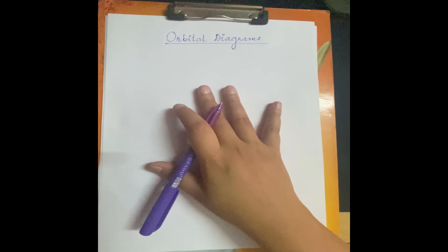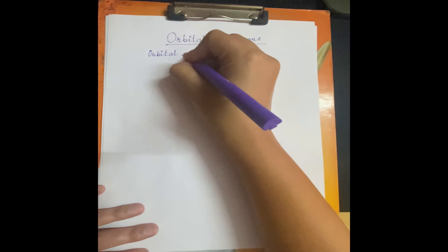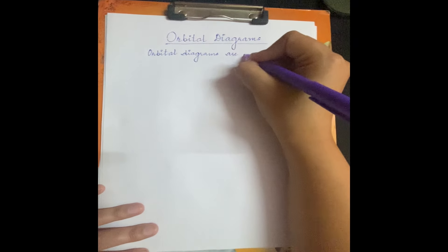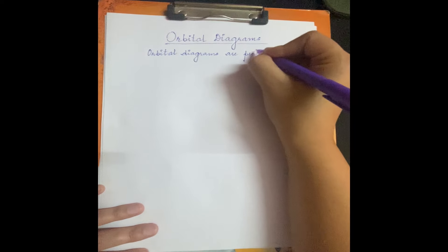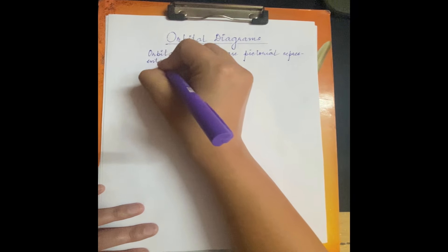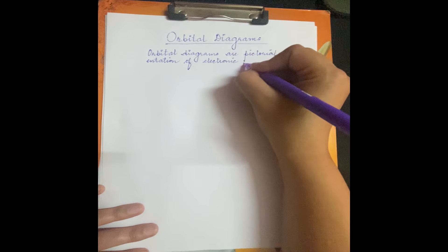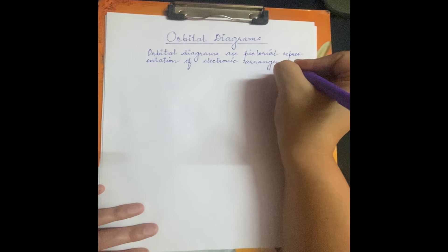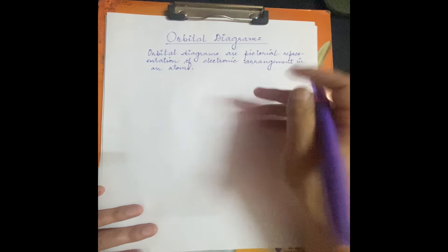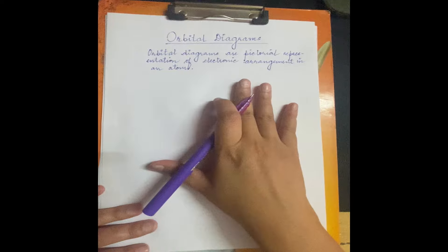So what are orbital diagrams? Orbital diagrams are a pictorial representation of electronic arrangement in an atom. It means that in orbital diagrams, we understand through a picture how electrons are arranged in an atom.